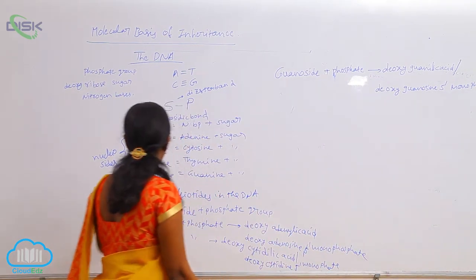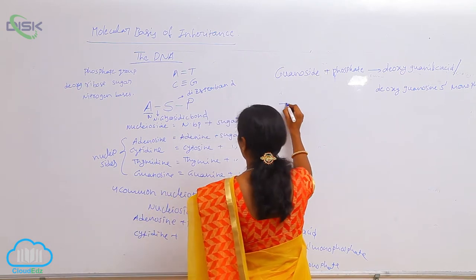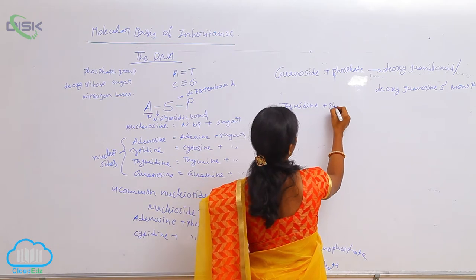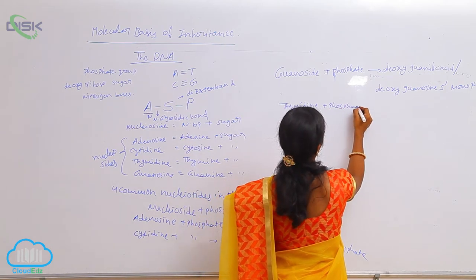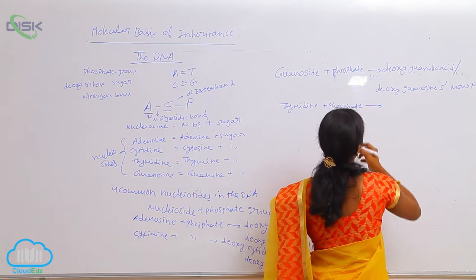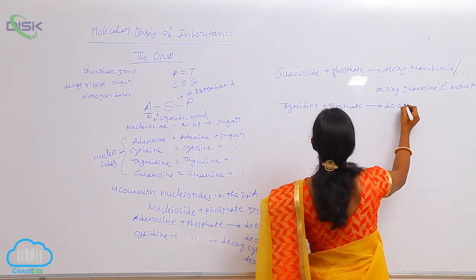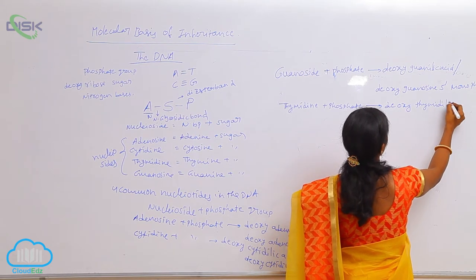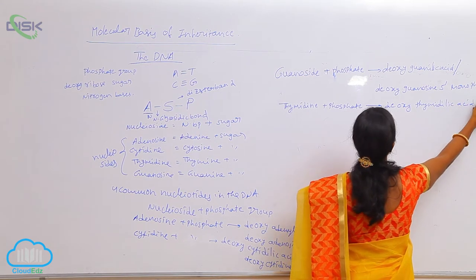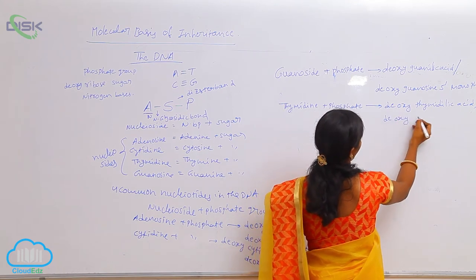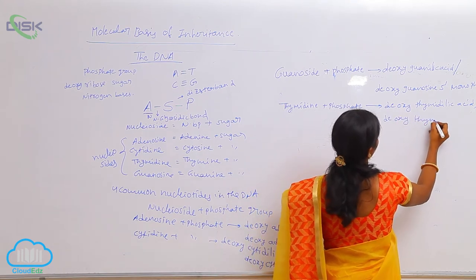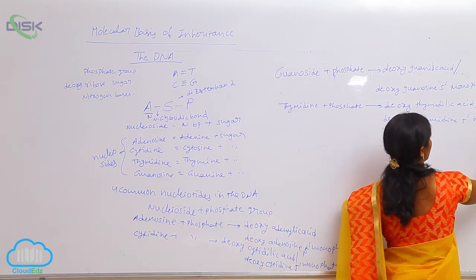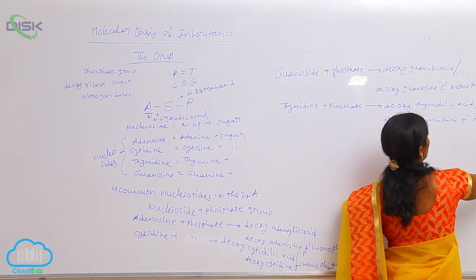And what is the next one? Thymine. So thymidine. Thymidine is a nucleoside plus a phosphate group, so it turns into the nucleotide form. That is deoxythymidylic acid, also written as deoxythymidine-5'-monophosphate.